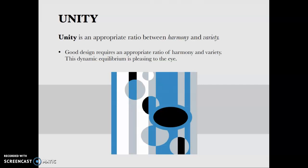Unity is the ratio, the right appropriate ratio between harmony and variety. Good design requires an appropriate ratio of harmony and variety. This dynamic equilibrium is pleasing to the eye. So tell me in the comments, first this is slide 59, what about this image is harmonious and what about this image has variety. It's different. So you can think similar and different, right? Harmony, variety.